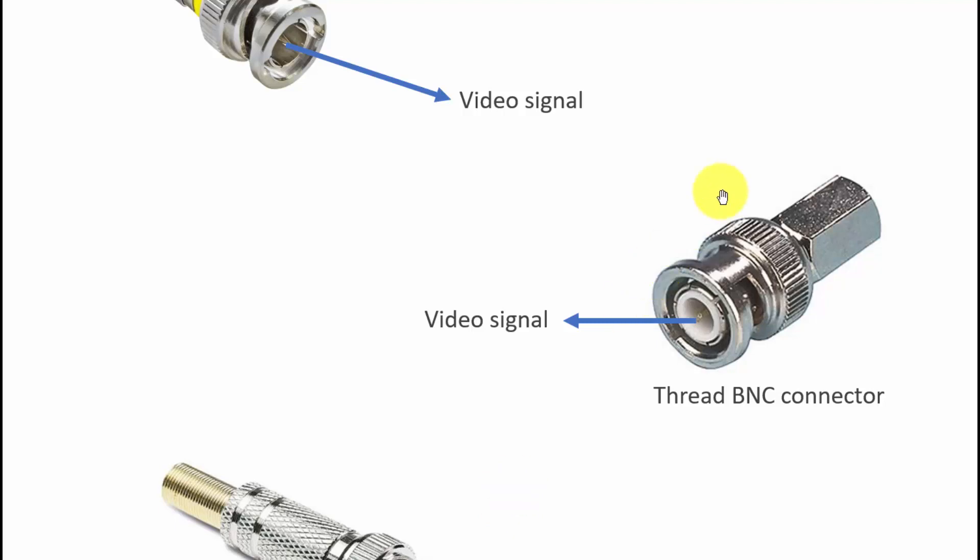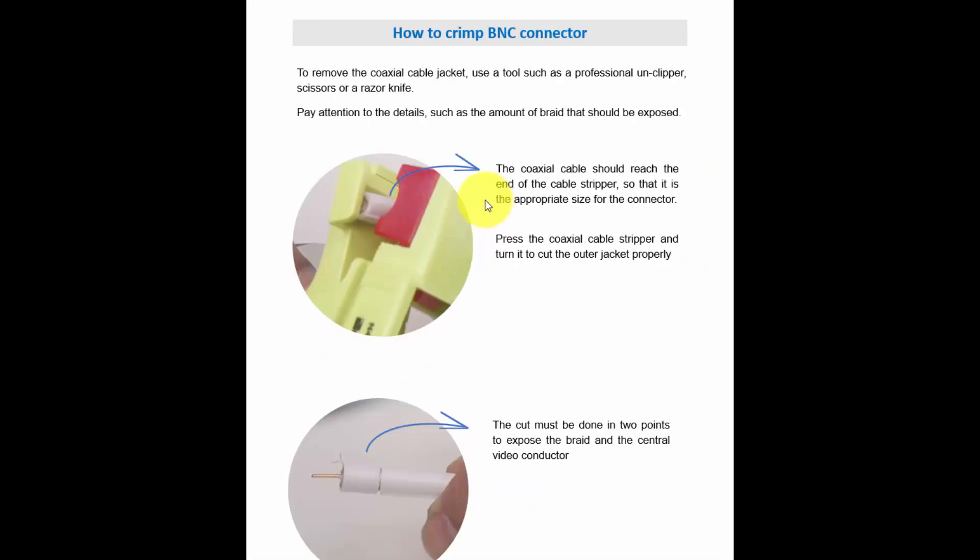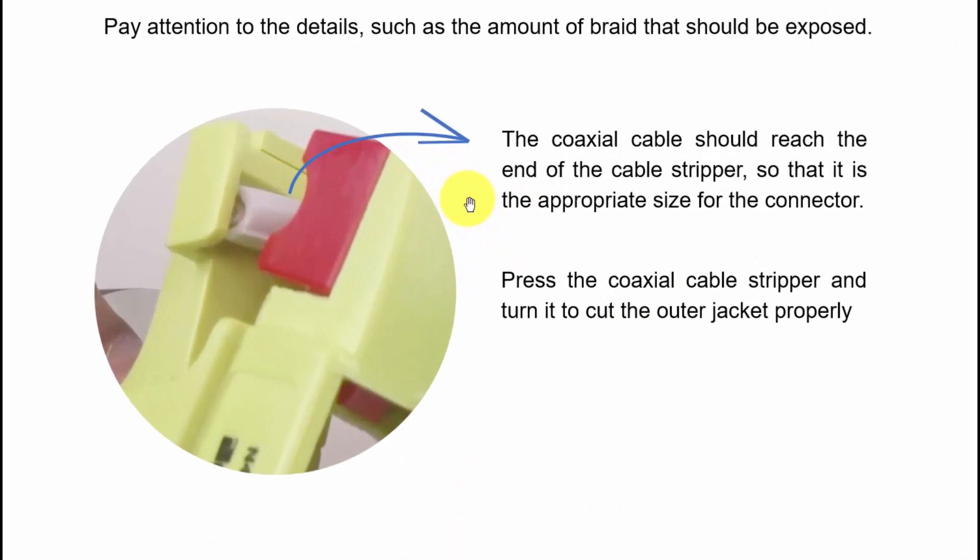Here, let's understand how you can crimp a cable. You're gonna need a tool like this one that is a stripper, so you can strip the cable like this. You just place the cable here, and then you close the tool and you strip the cable. Then you're going to remove this part of the cable to expose the conductor, the central conductor.